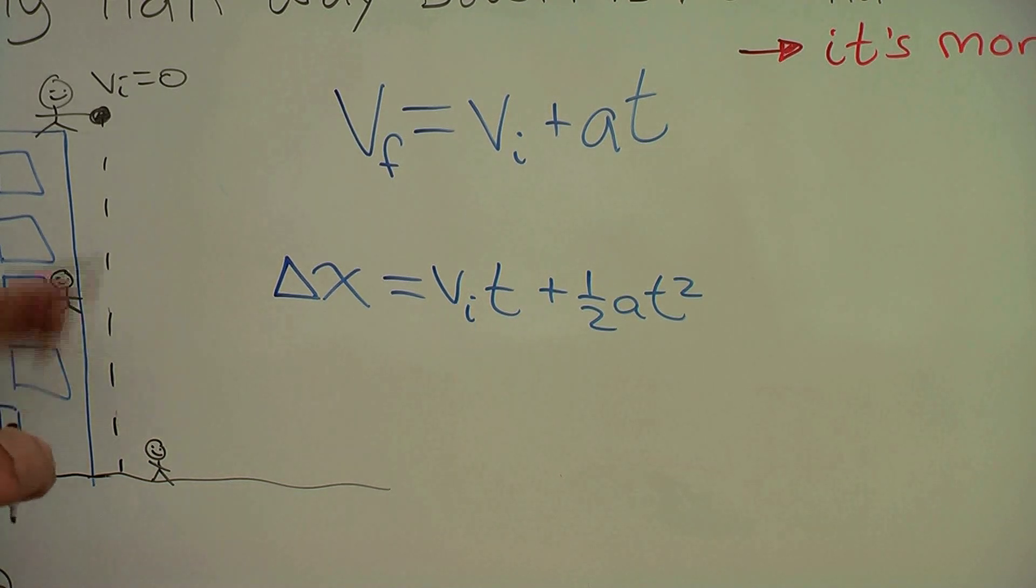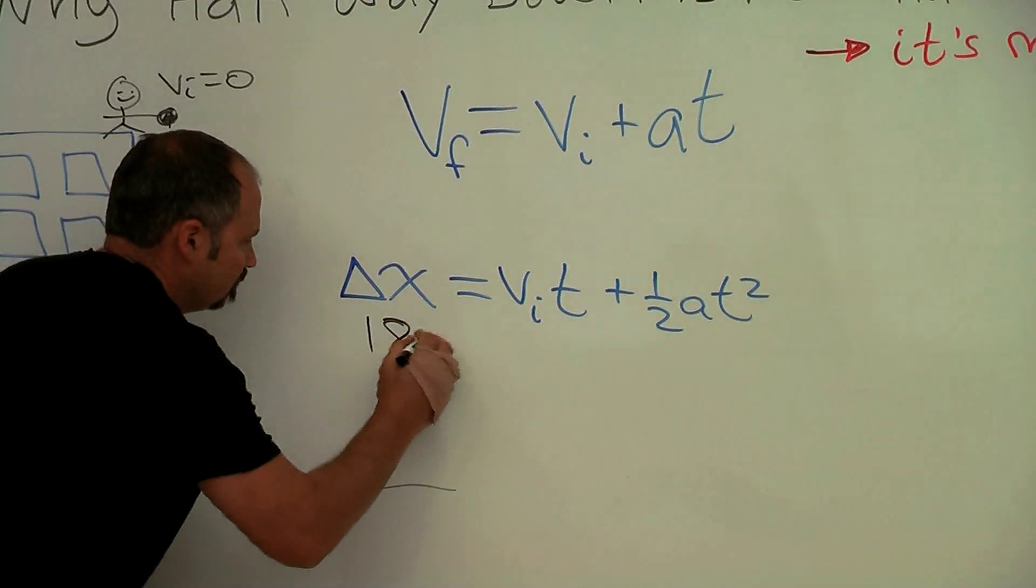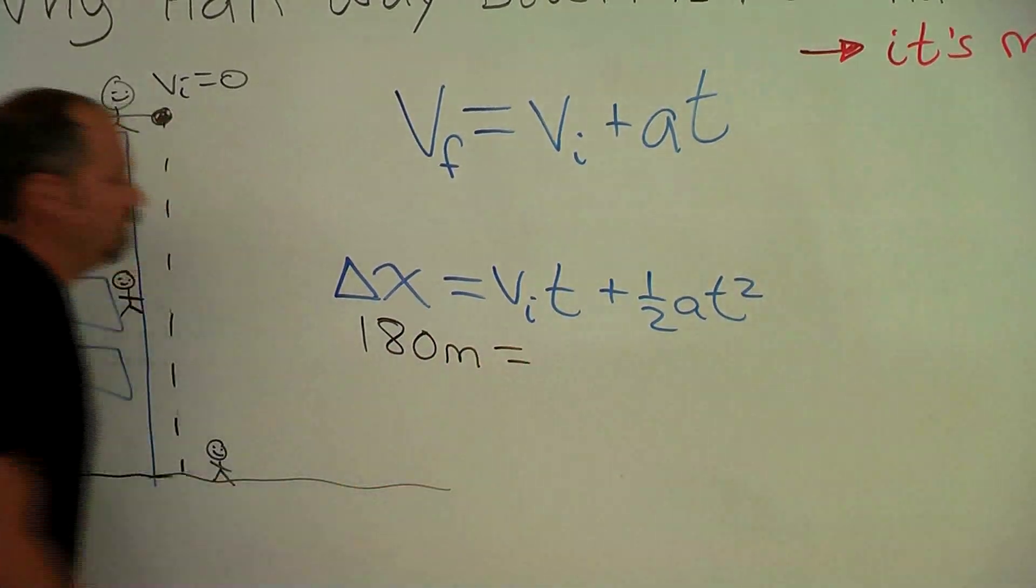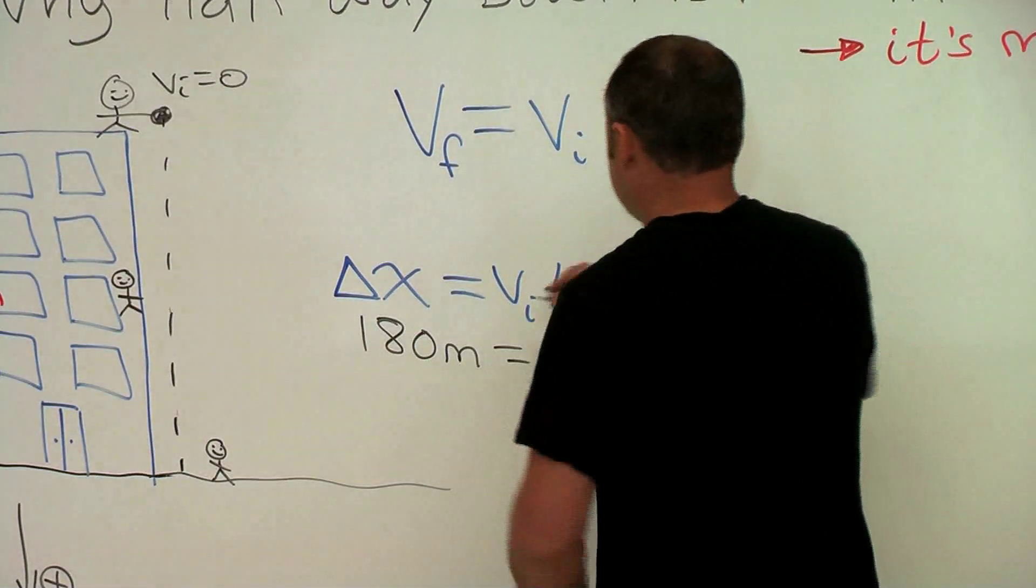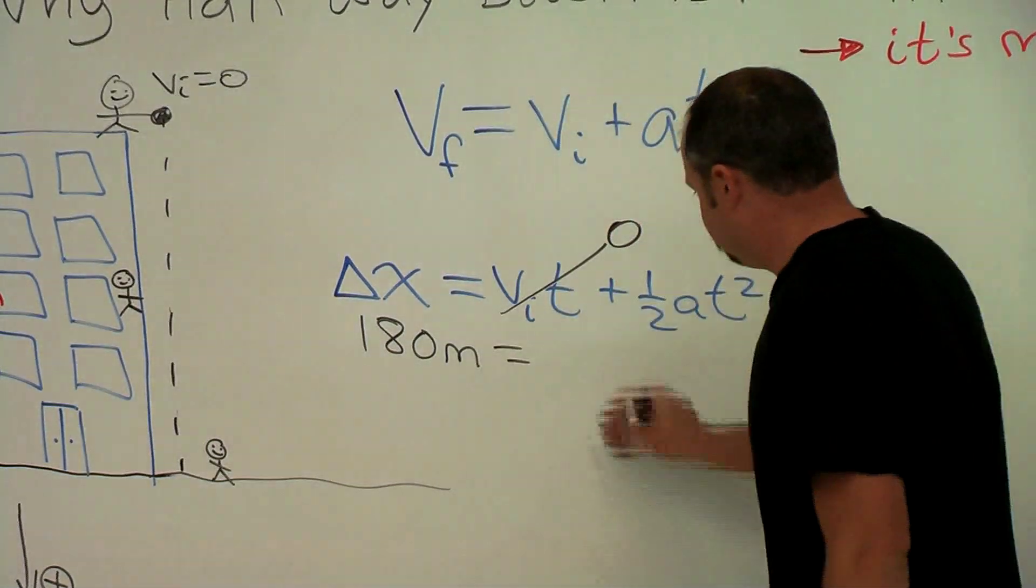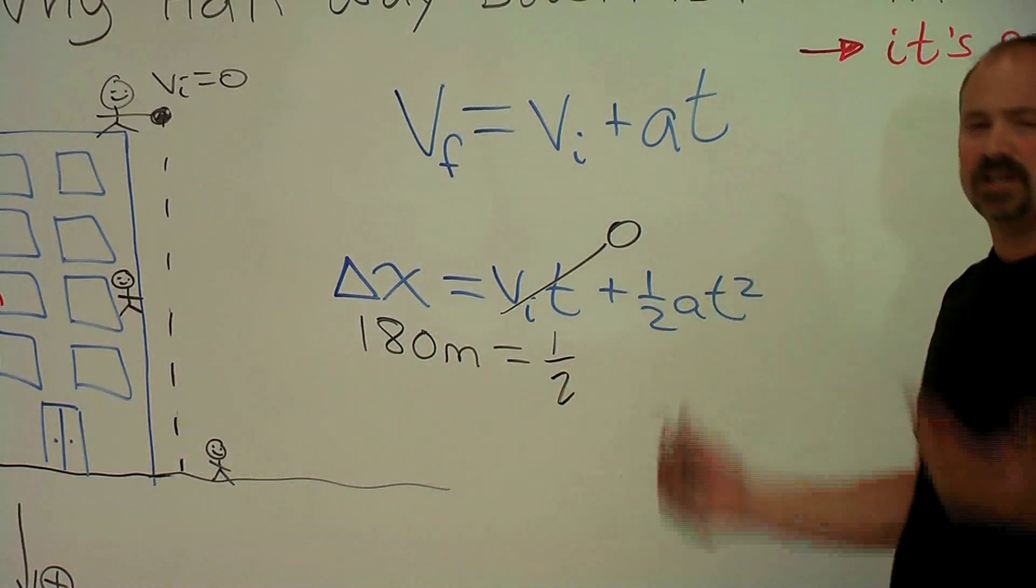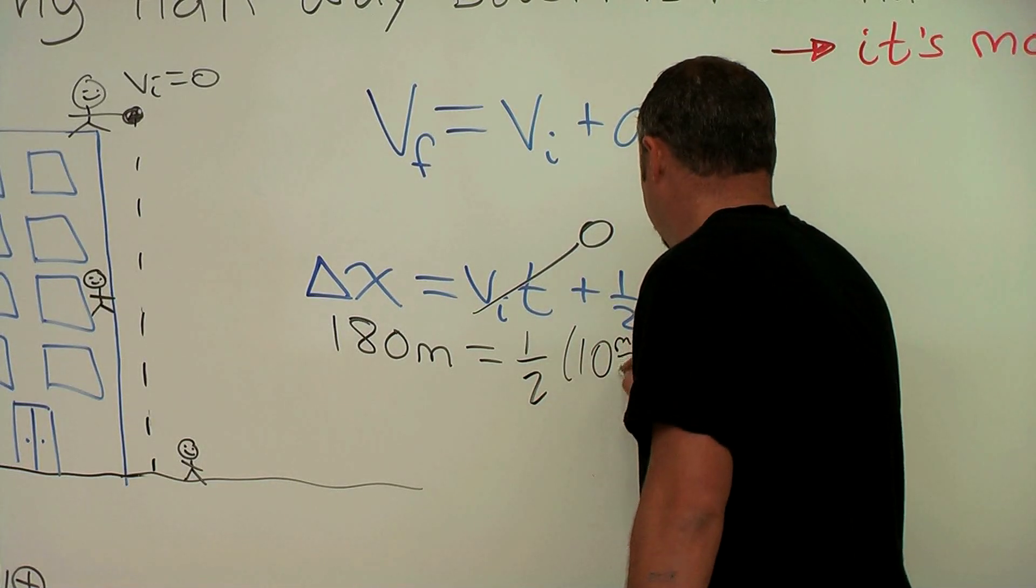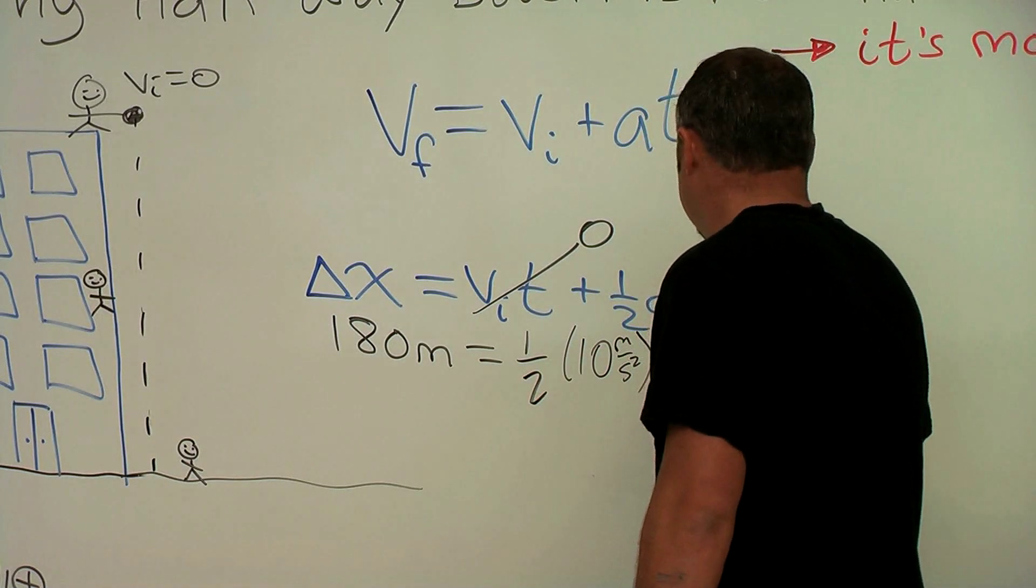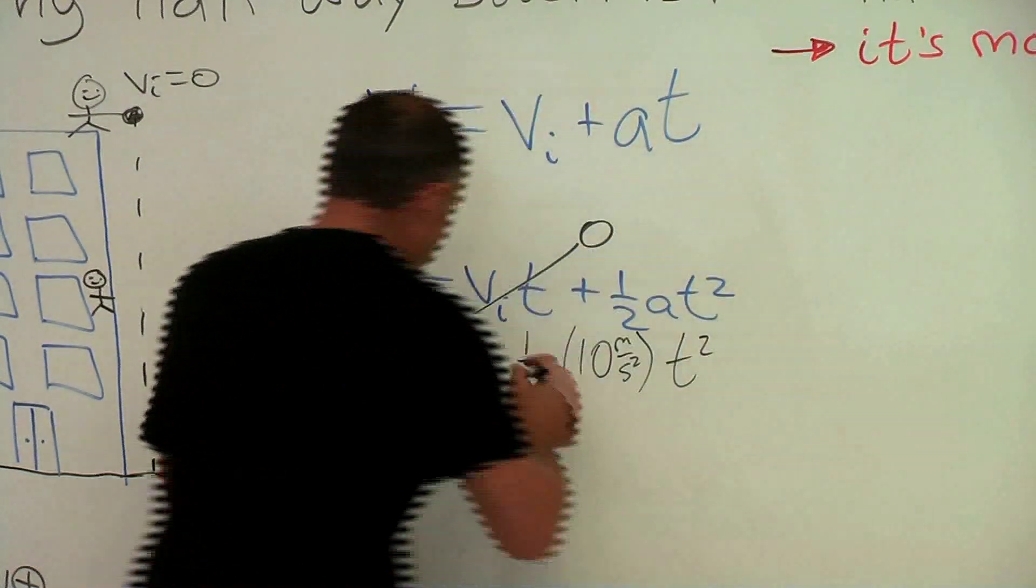Let's plug in the numbers. We know that this distance is 180 meters and we know the initial speed is zero. Zero times anything is zero, so we just get equal to one half a. What is the acceleration? It's the acceleration of gravity, 10 meters per second squared, times t squared.